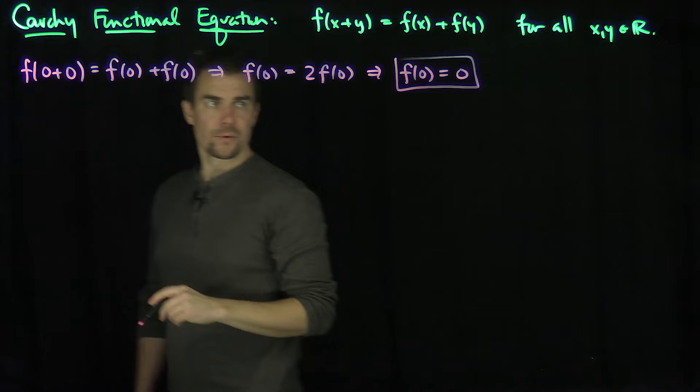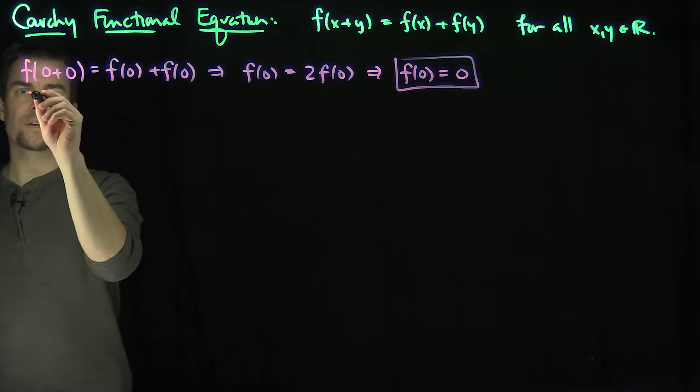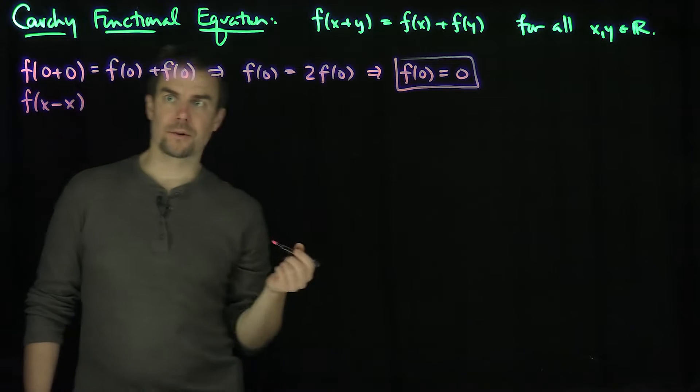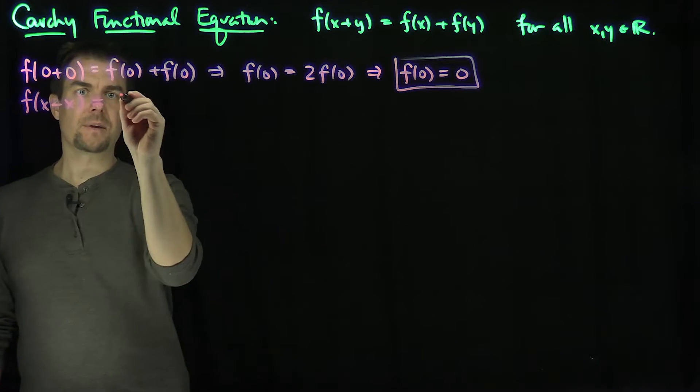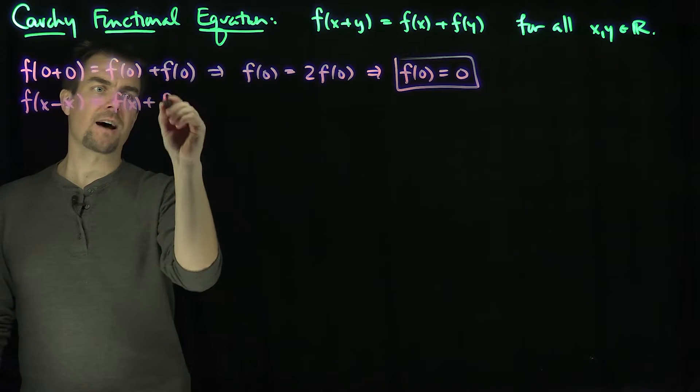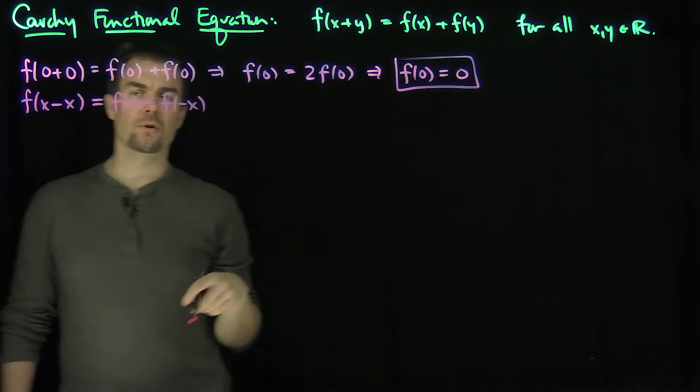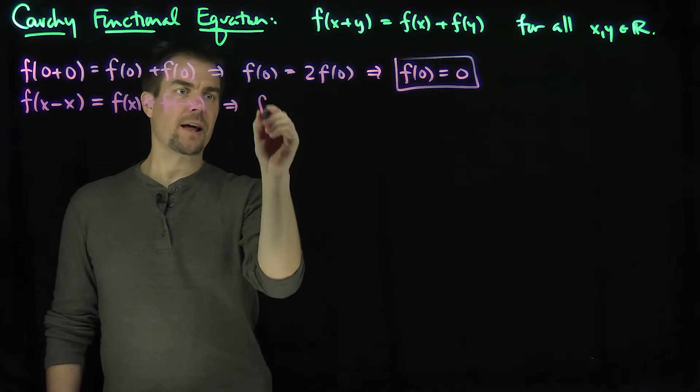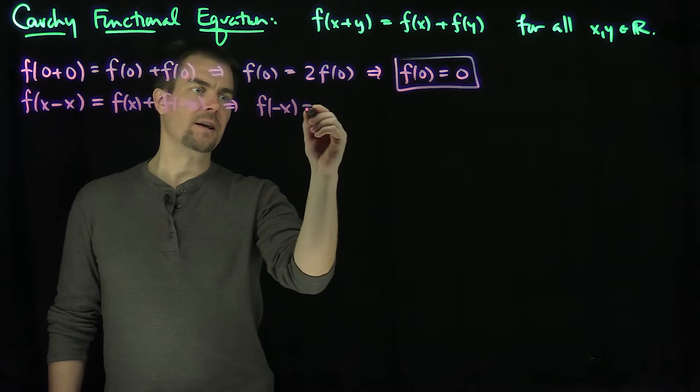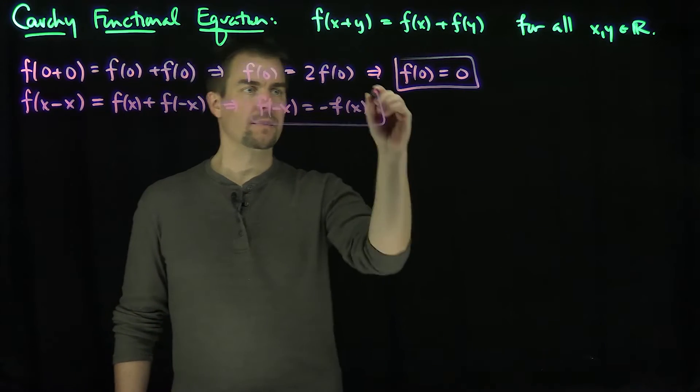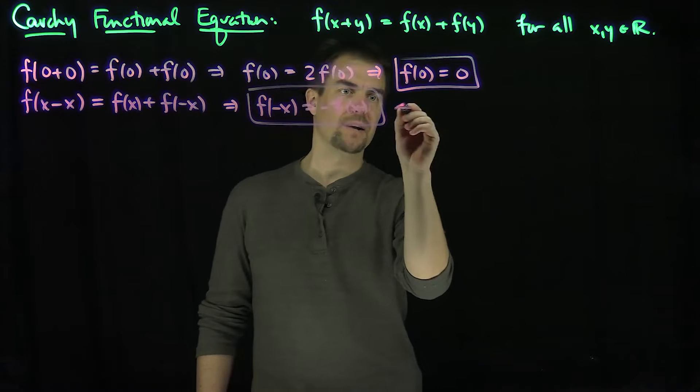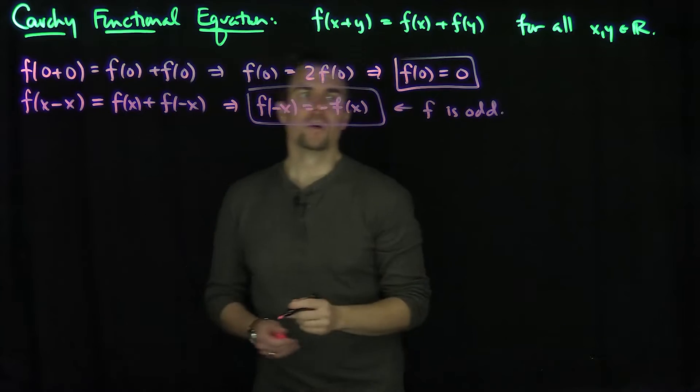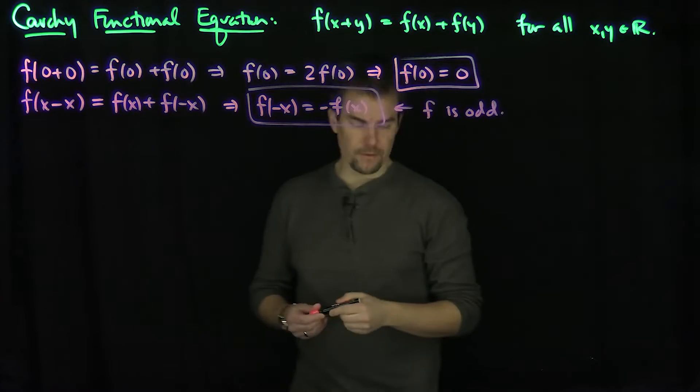That's one beautiful thing we get. So it goes through the origin. And we also know that if I look at f(x-x), well, that's zero. And that's going to be f(x) + f(-x) by our functional equation. And I know that the left-hand side is zero. So that tells me that f(-x) = -f(x). In other words, the function is odd. So f is an odd function.